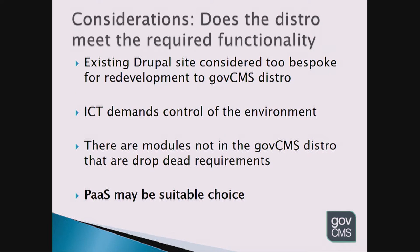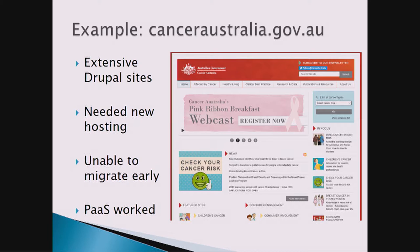The second consideration is whether our distribution meets the required functionality. Maybe you've got an existing Drupal site that you want to bring over, but it's too bespoke — it's existed for 10 years, has functionality creep, and there's no way you can migrate it across. Or the ICT area demands control and doesn't want anybody else looking after it, or there are modules that are drop-dead requirements. PaaS could be a suitable choice. An example is Cancer Australia, who came to us recently with extensive Drupal holdings — quite a number of sites needing new hosting. We put them into the PaaS environment quite quickly.